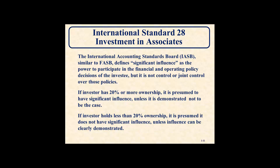Under International Standard 28, the IASB defines significant influence as the power to participate in the financial and operating policy decisions of the investee, but not control or joint control over those policies. If an investor has 20% or more ownership, it is presumed to have significant influence unless demonstrated otherwise. If the investor holds less than 20%, it is presumed that they don't have significant influence unless clearly demonstrated.